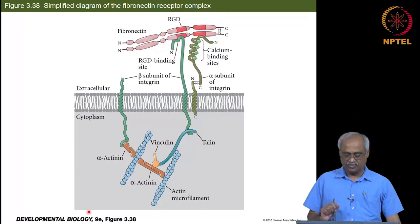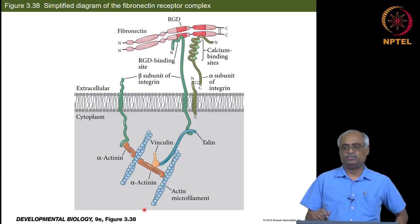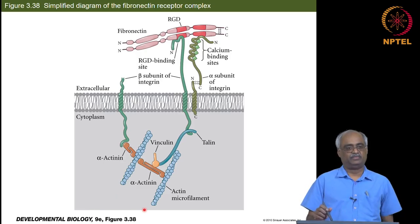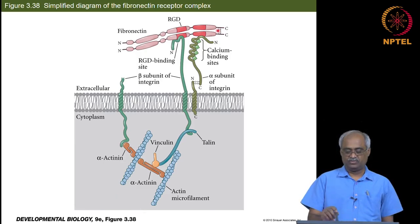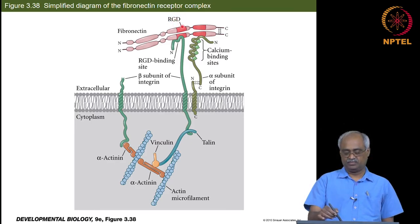This cartoon shows fibronectin with its arginine-glycine-aspartic acid repeat units, which act as binding sites for integrins.